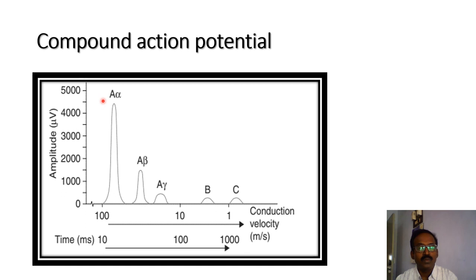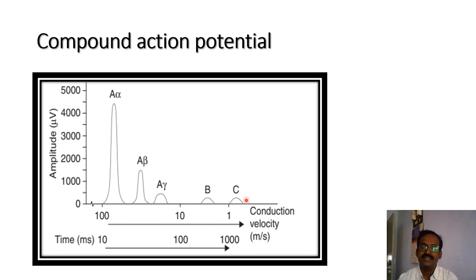So Type A fibers produce more peaks compared to A-beta and A-gamma. Type B and C fibers produce less peaks because their diameter is less and conduction velocity is also less. So compound action potential is mainly recorded from the mixed nerve.